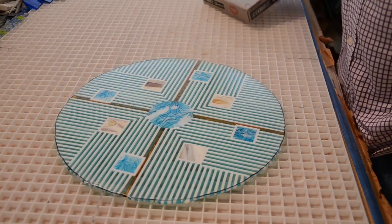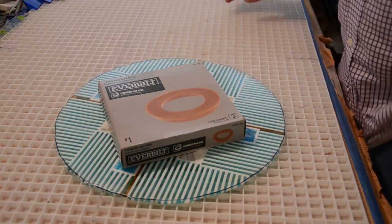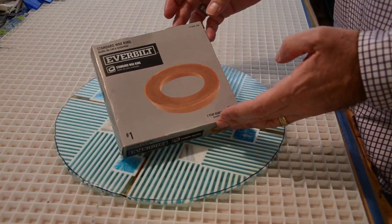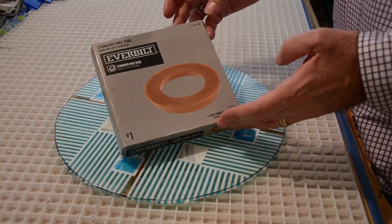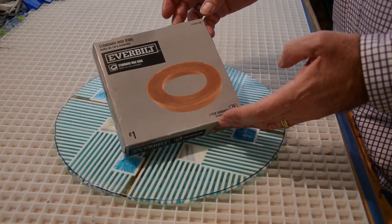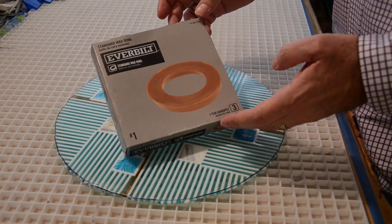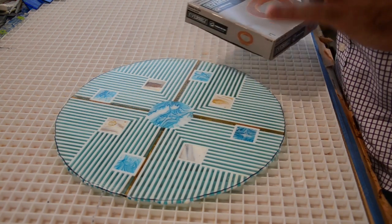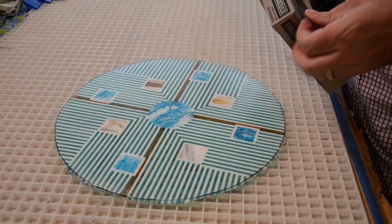I found that I can use a standard wax ring for a toilet bowl that you can get at your big box or actually any hardware store will carry them. It costs less than $2 and this wax will last you forever. I think it cost me $1.79 or so.